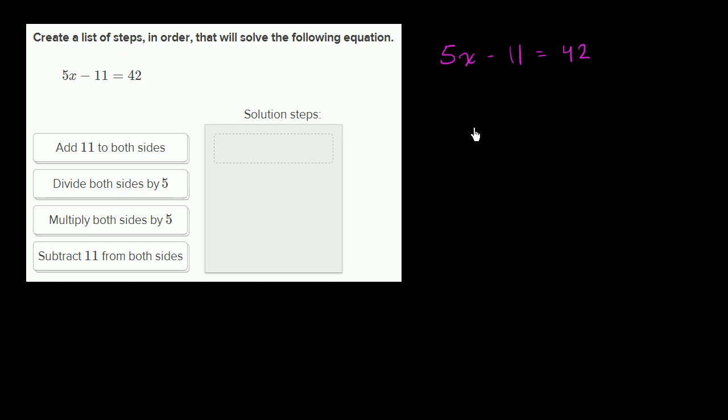And as we've seen before, whenever I like to solve something, I like to isolate the variable that I'm trying to solve for. So I want to isolate this 5x on one side, and then eventually I'm going to try to get that into being an x. So the best way to isolate it is to get rid of this minus 11.